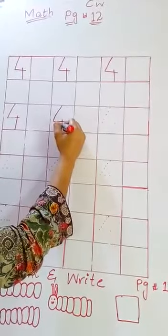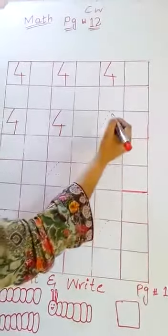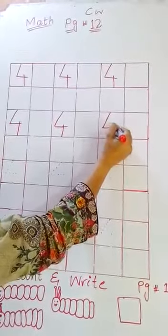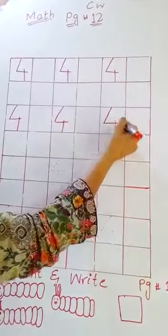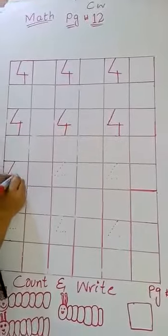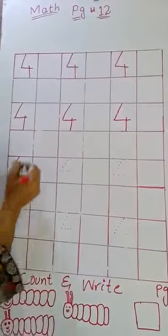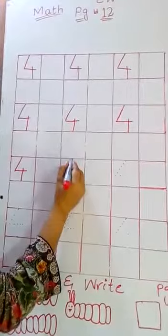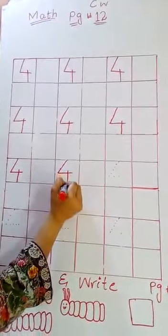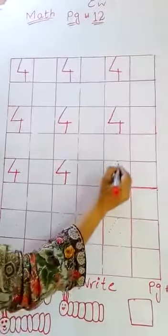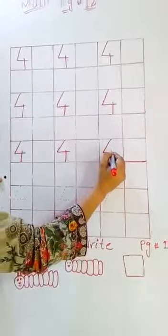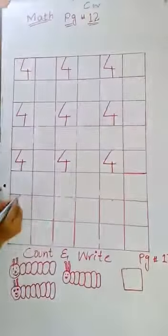This is four: draw slanting line, sleeping line, standing line. Continue with slanting line, sleeping line, standing line. That is four.